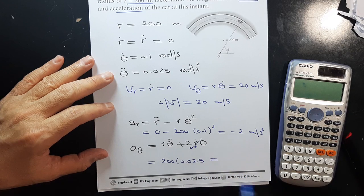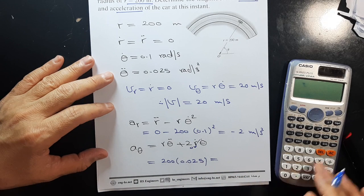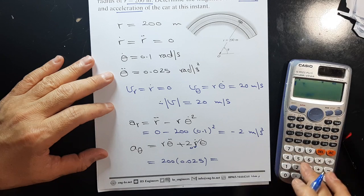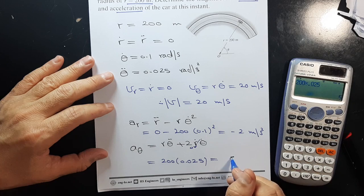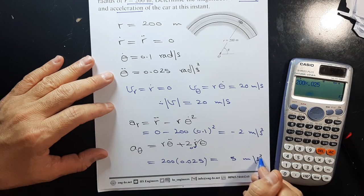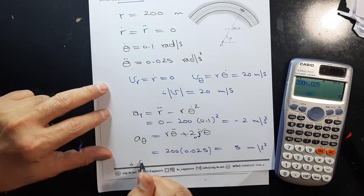So we have 200 times 0.025, which gives us 5 meters per second squared. Therefore...